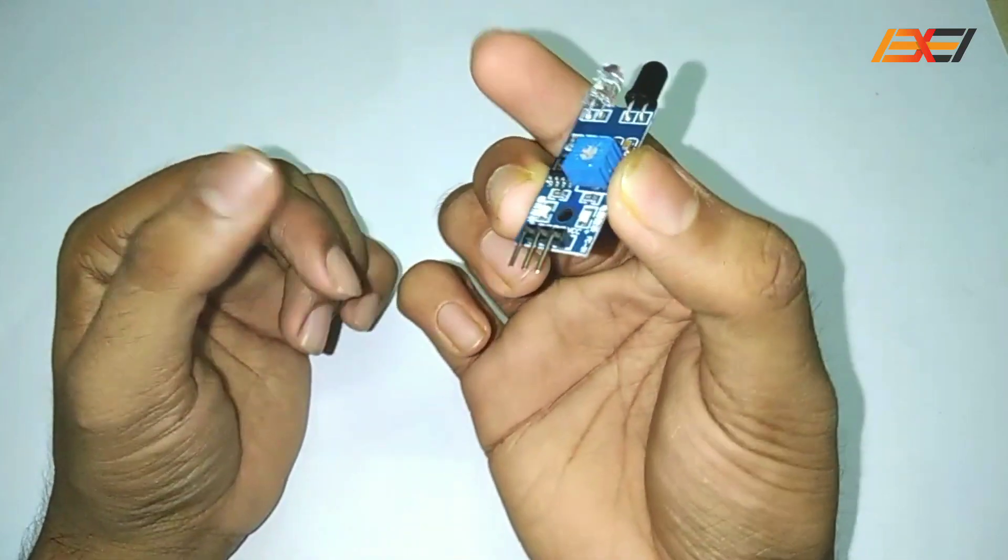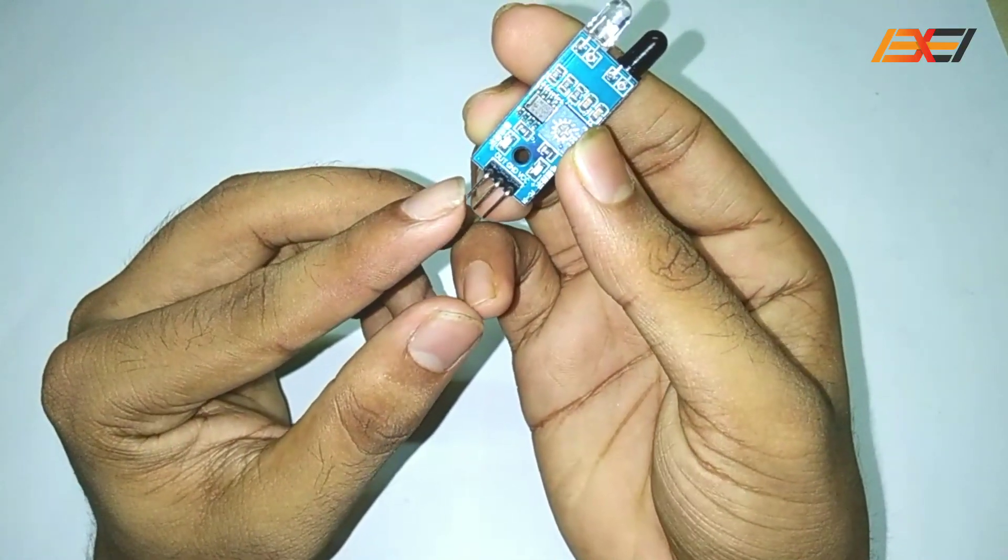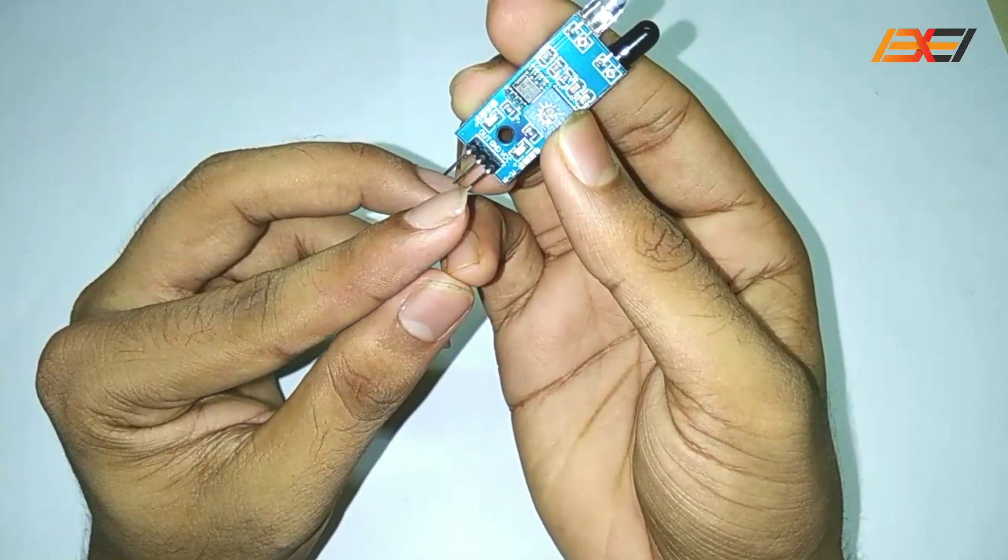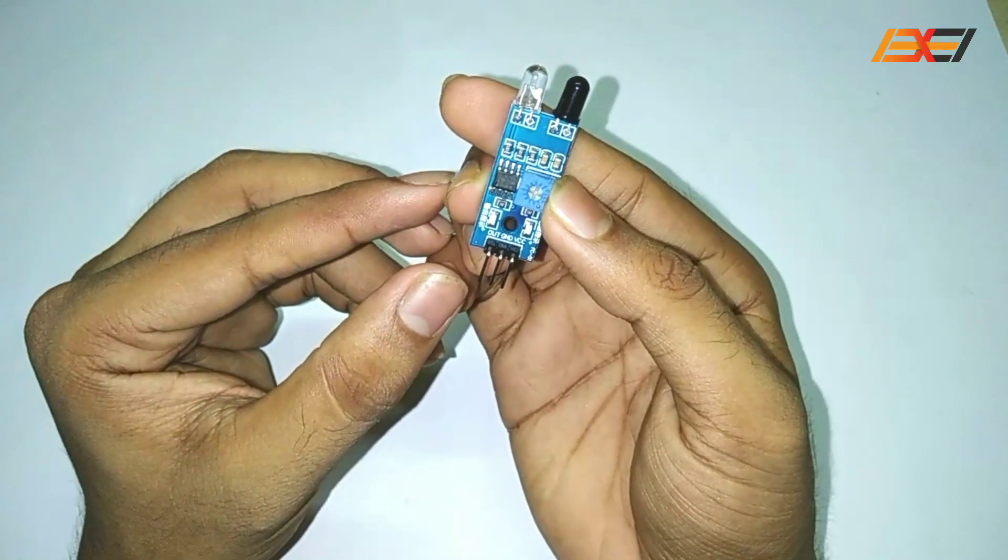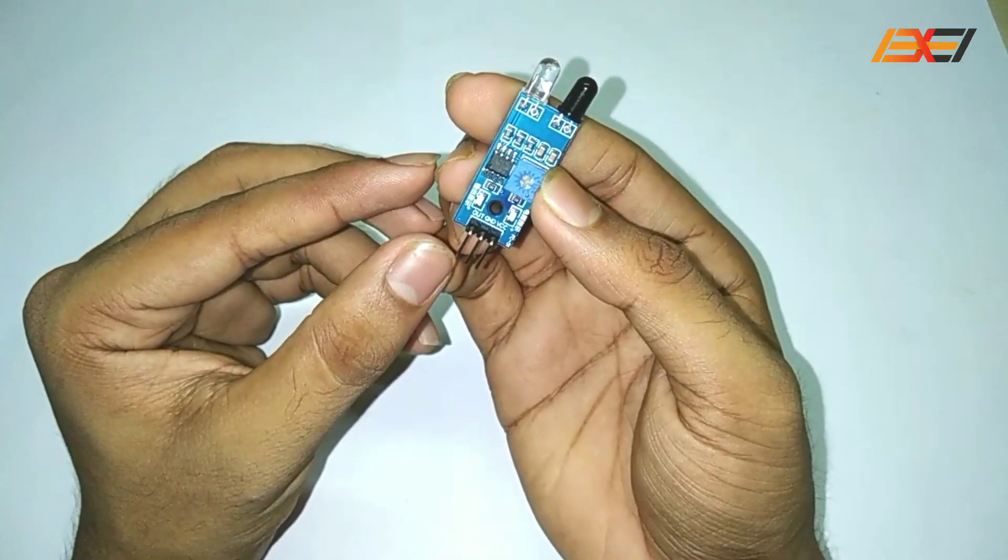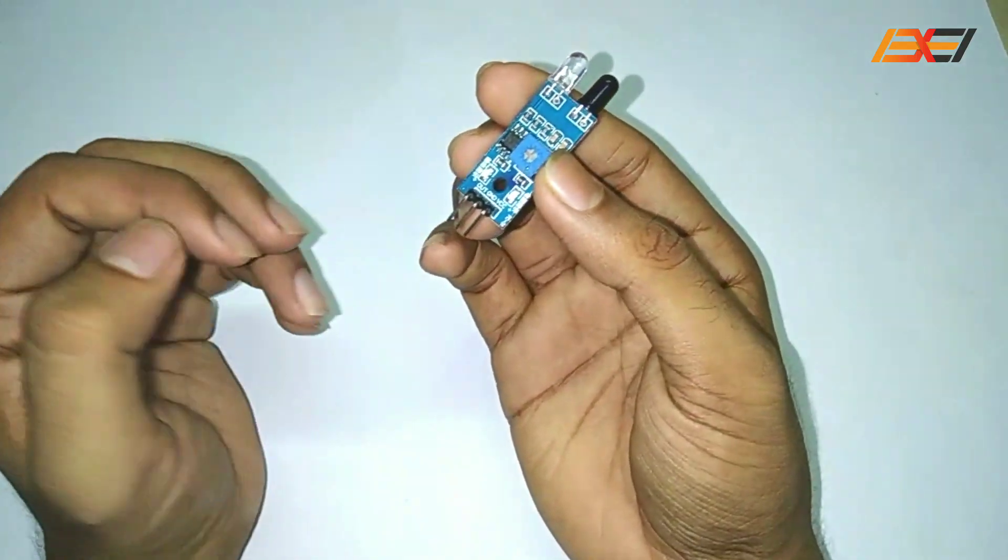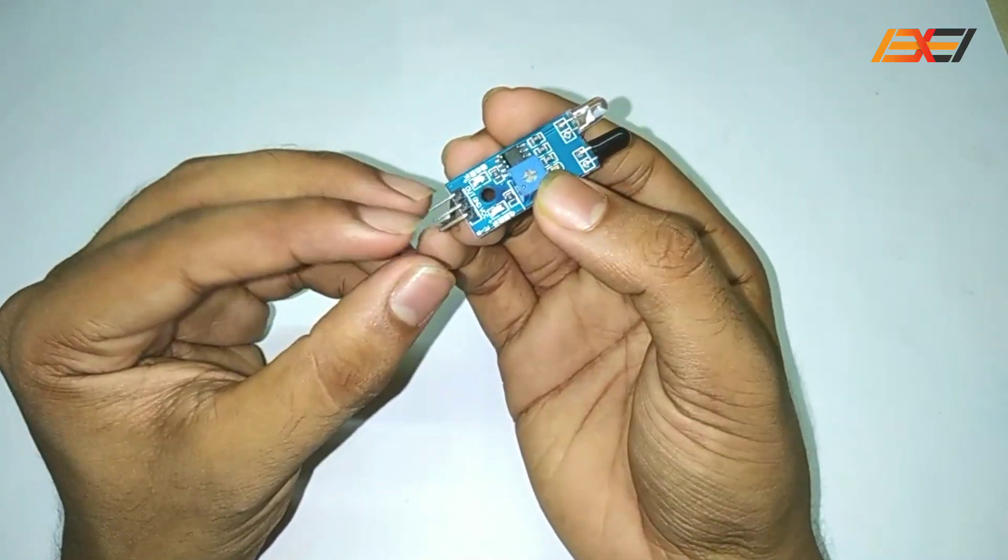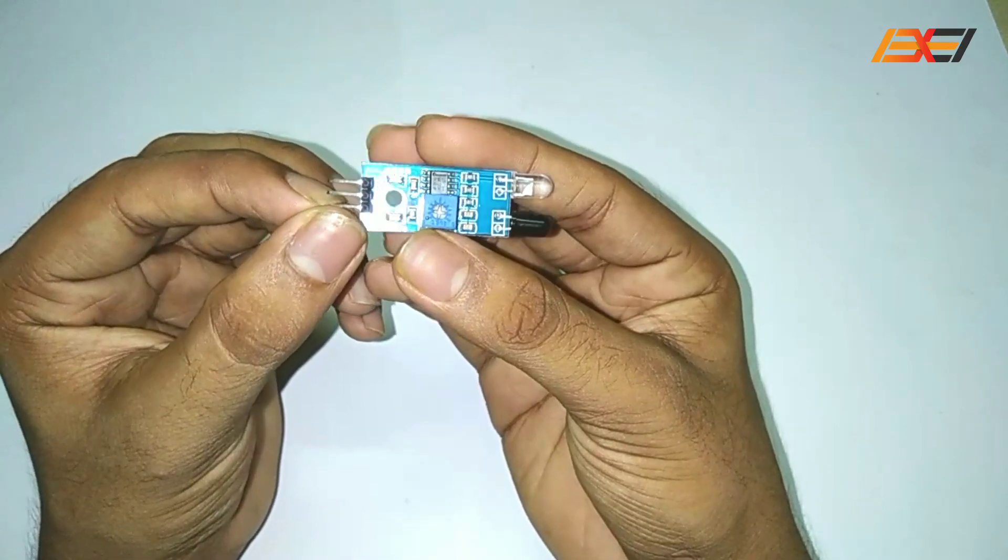You can see here three pins. This is V output, this is ground and this is VCC pin. Now this V output pin is connected to the Arduino. The ground is the ground pin. The ground pin is grounded and the VCC pin is connected to 5V.